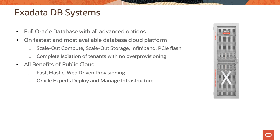Let's now look at the Exadata DB systems. When you deploy an Exadata DB system in Oracle Cloud Infrastructure, you get Oracle Database Enterprise Edition with all the advanced options. Exadata DB systems is Oracle's fastest and most available database cloud platform. You can scale out compute, scale out storage, and it has InfiniBand switches with InfiniBand networking between the database server and the storage server. It also has PCIe flash cards attached to the storage server for better performance. Exadata gives complete isolation of tenants with no over-provisioning, and it gives customers all the benefits of the public cloud — it is fast to provision, elastic, and web-driven provisioning.